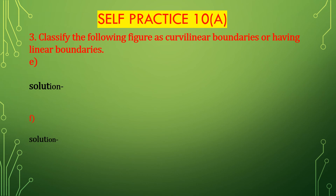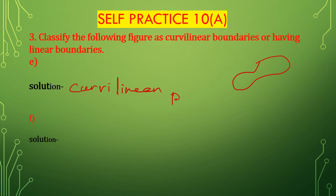Now E bit: classify the following figure as curvilinear boundaries or having a linear boundary. First draw this given figure. The boundaries which contain only curved lines are called the curvilinear boundaries. This boundary contains only curved lines, so this is a curvilinear boundary.